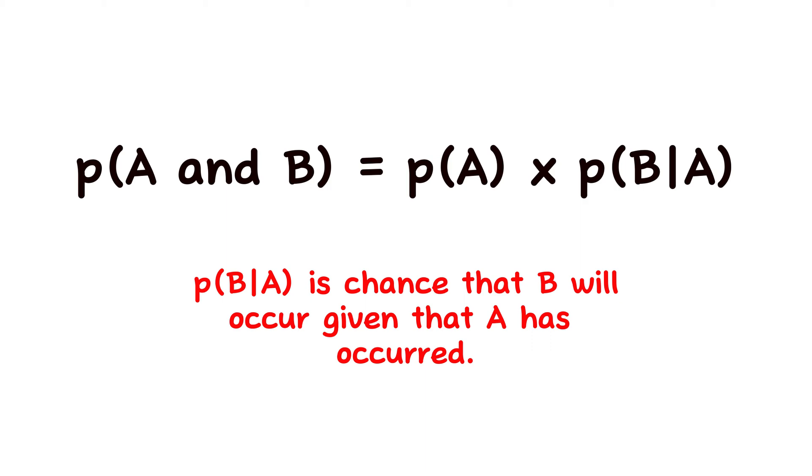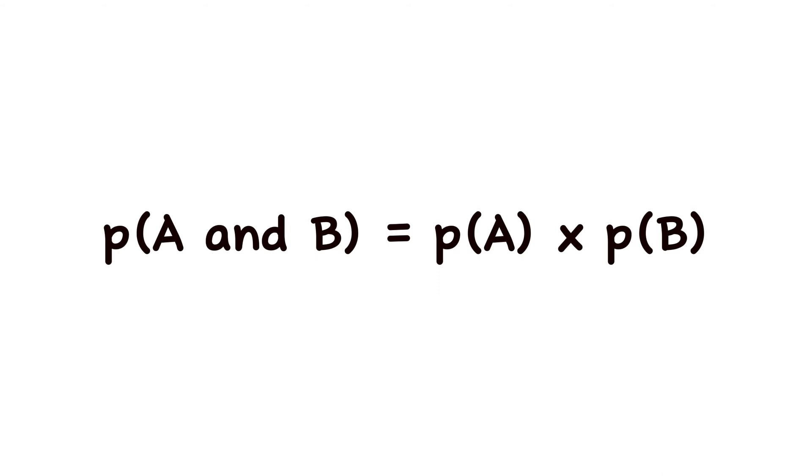The last event type is the independent event — the opposite of dependent. Here, the chance of one event occurring does not affect the chance of the other event occurring. For events A and B: P(A and B) = P(A) × P(B). A typical example: if I flip a coin in my right hand and roll a die in my left hand, whether heads or tails shows up has no connection to whether 1, 2, 3, 4, 5, or 6 shows up on the die. The two events are completely independent.